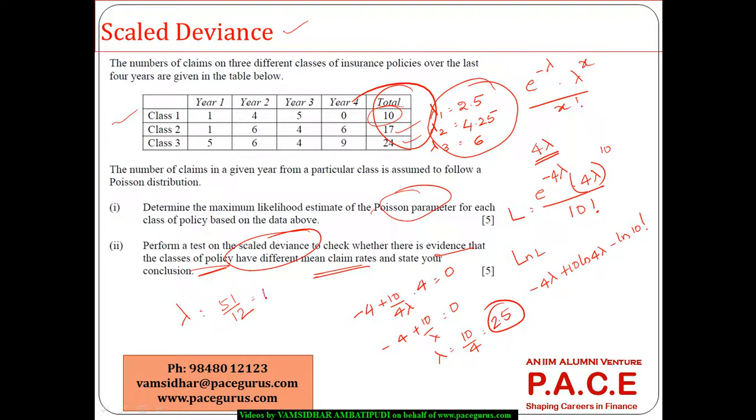Which is going to be around 4.25. My lambda, 41 plus 10 is 51, 51 by 12 is going to be my lambda so which is going to be 4.25. Now this is what is the overall.